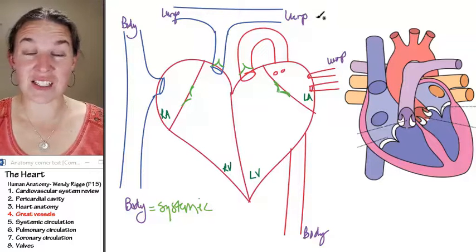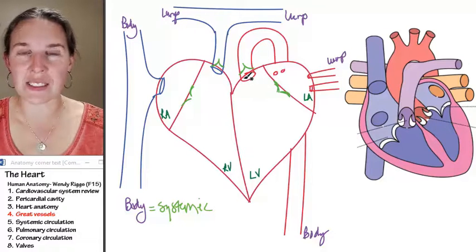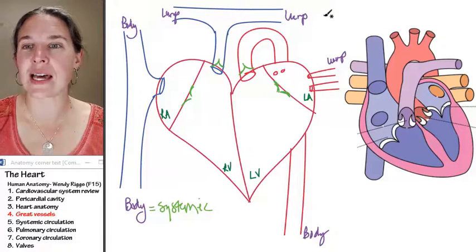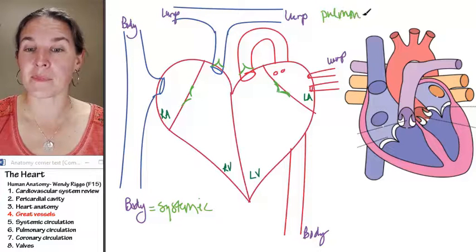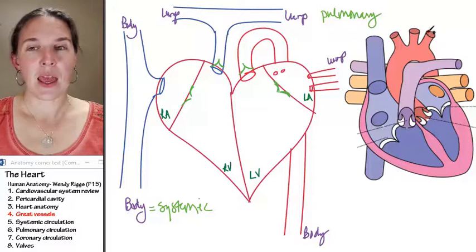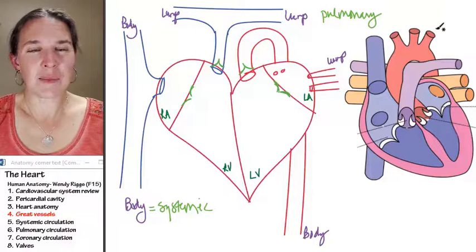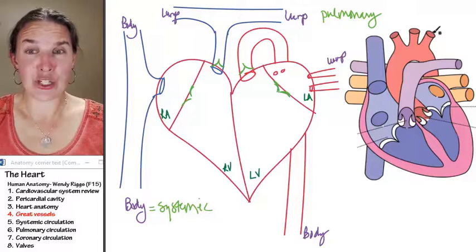And if it's associated with the lungs, if the vessel, the great vessel, is going to or from the lungs, that's part of the pulmonary system. And really, your heart really does have two pieces.